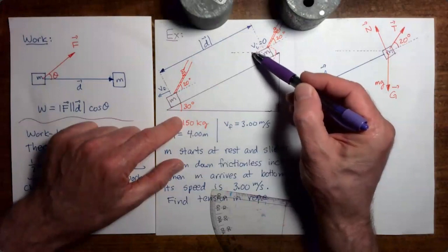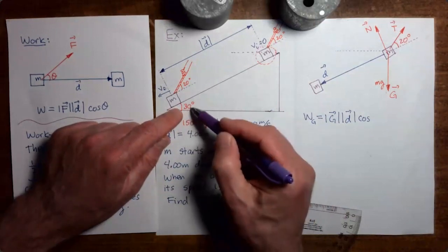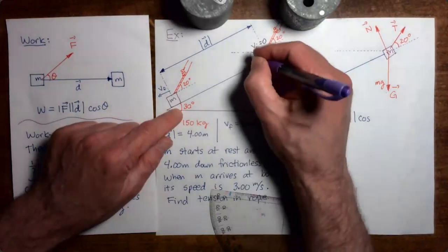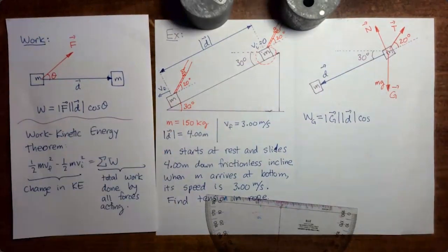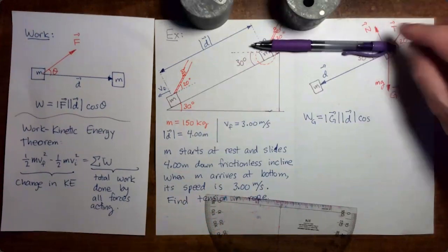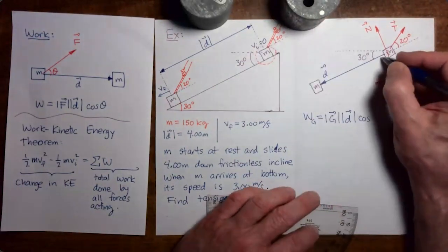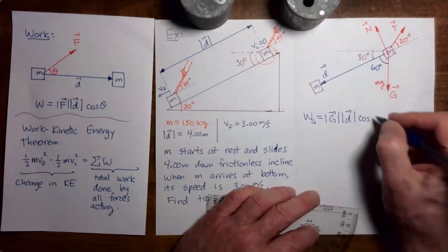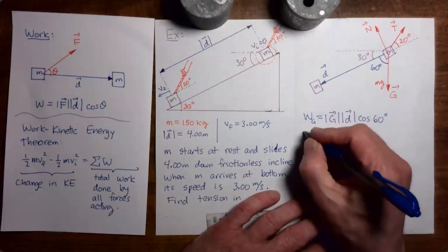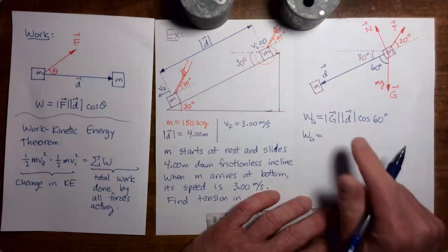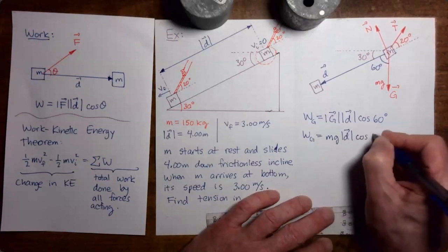Using alternate interior angles: if the incline angle is 30 degrees, the angle between the horizontal and the incline is also 30 degrees. From the horizontal down to the gravitational force is 90 degrees, so the angle between the gravitational force and the displacement vector is 60 degrees. Since the magnitude of the gravitational force is mg, the work done by gravity equals mg times the magnitude of displacement times cosine 60.